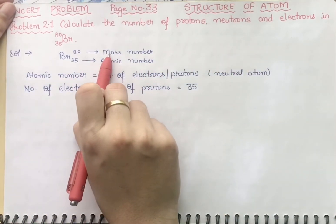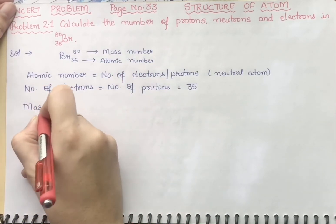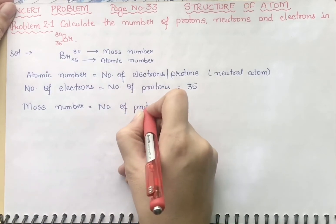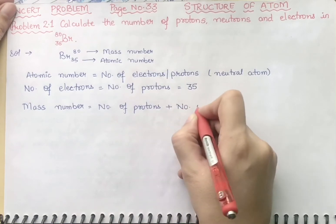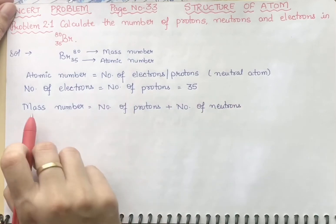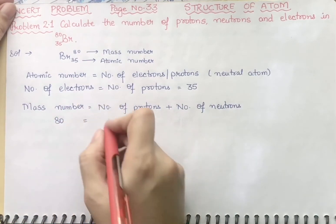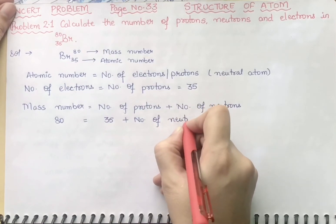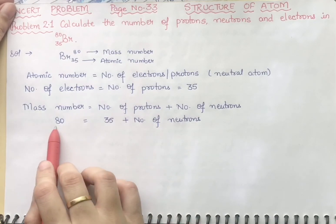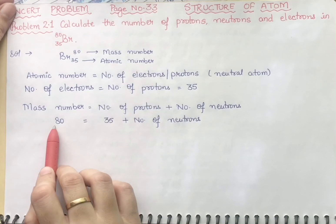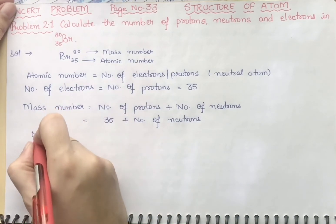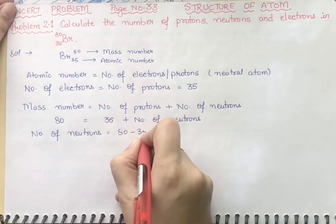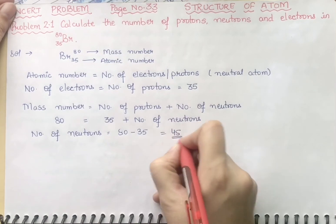Next, we find the number of neutrons using the formula: mass number equals number of protons plus number of neutrons. We have mass number 80 and number of protons 35, so number of neutrons equals 80 minus 35, which is 45.